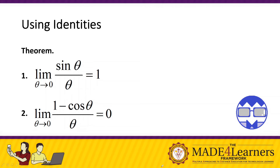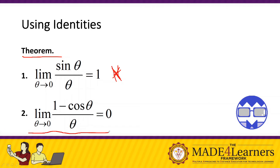Theorem number one: the limit of sine theta over theta as theta approaches zero is equal to one. If we try to substitute zero, sine of zero is zero over zero. However, this theorem states that sine theta over theta is actually one. We will prove this later using a table of values.